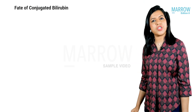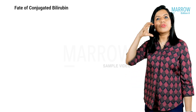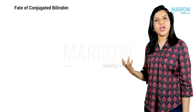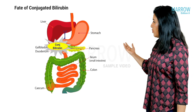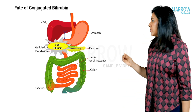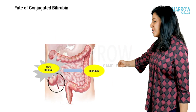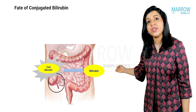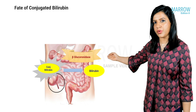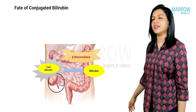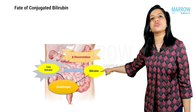The conjugated bilirubin secreted into the bile duct travels through the second part of the duodenum into the intestine — the third organ system. Here, conjugated bilirubin is first deconjugated back to bilirubin by the enzyme beta-glucuronidase, which is present in intestinal bacteria.